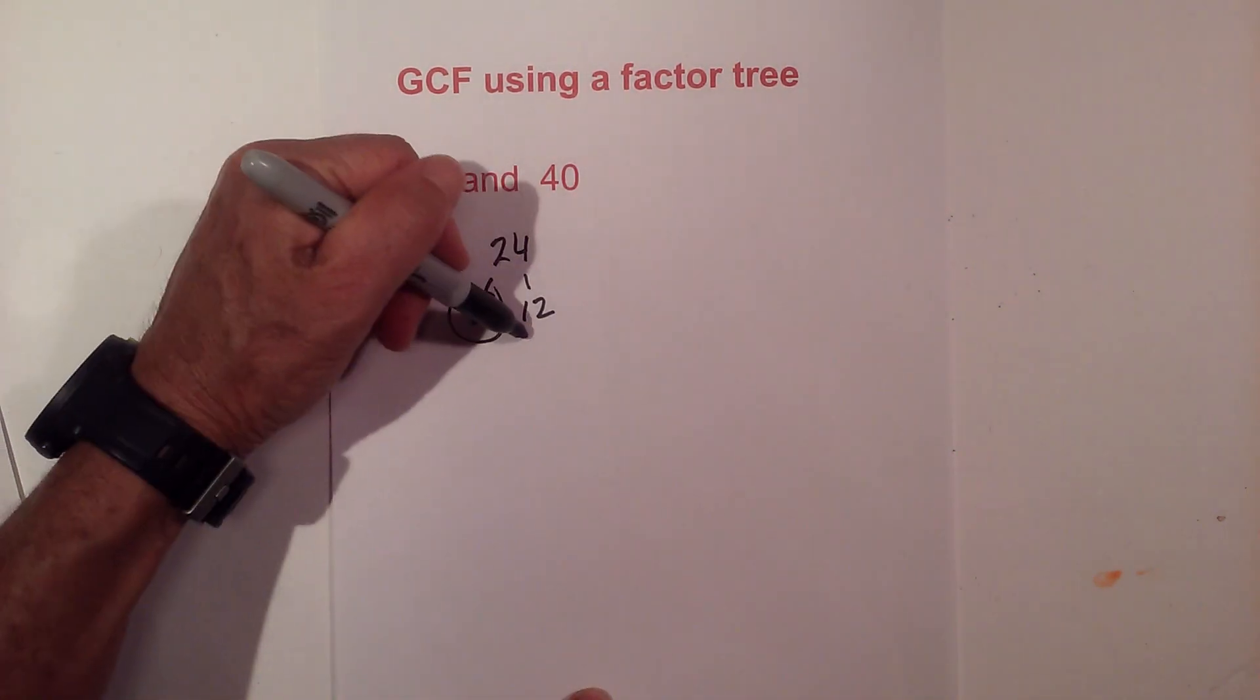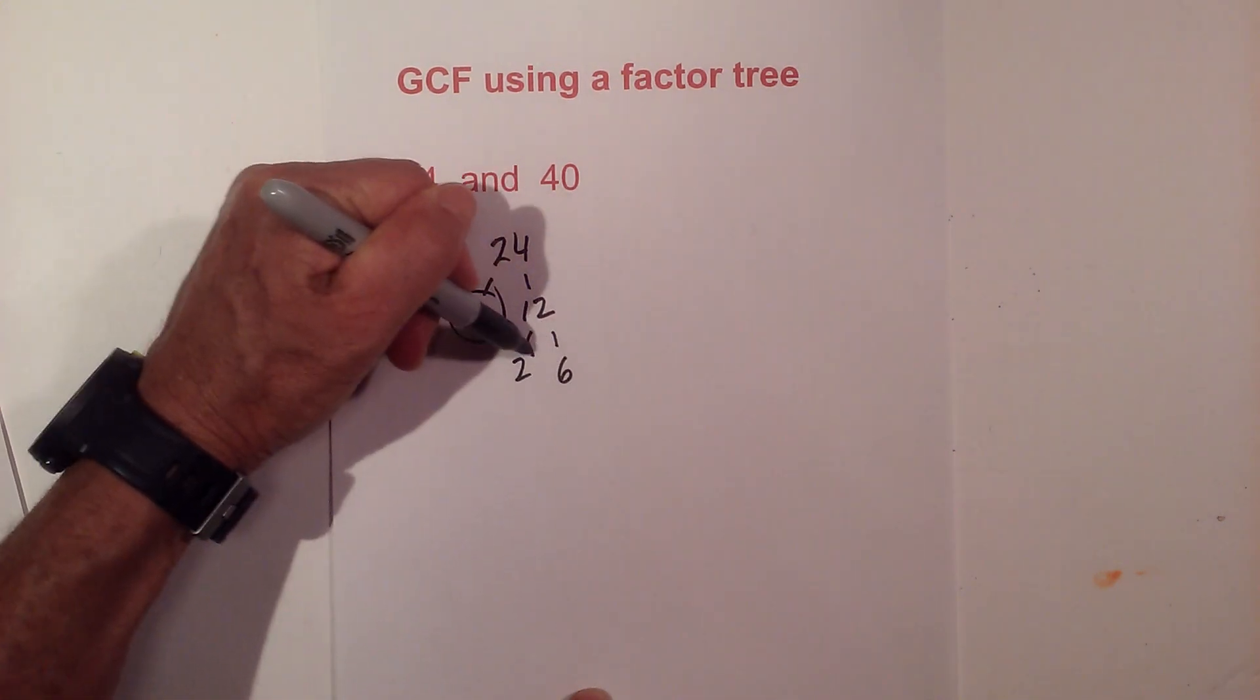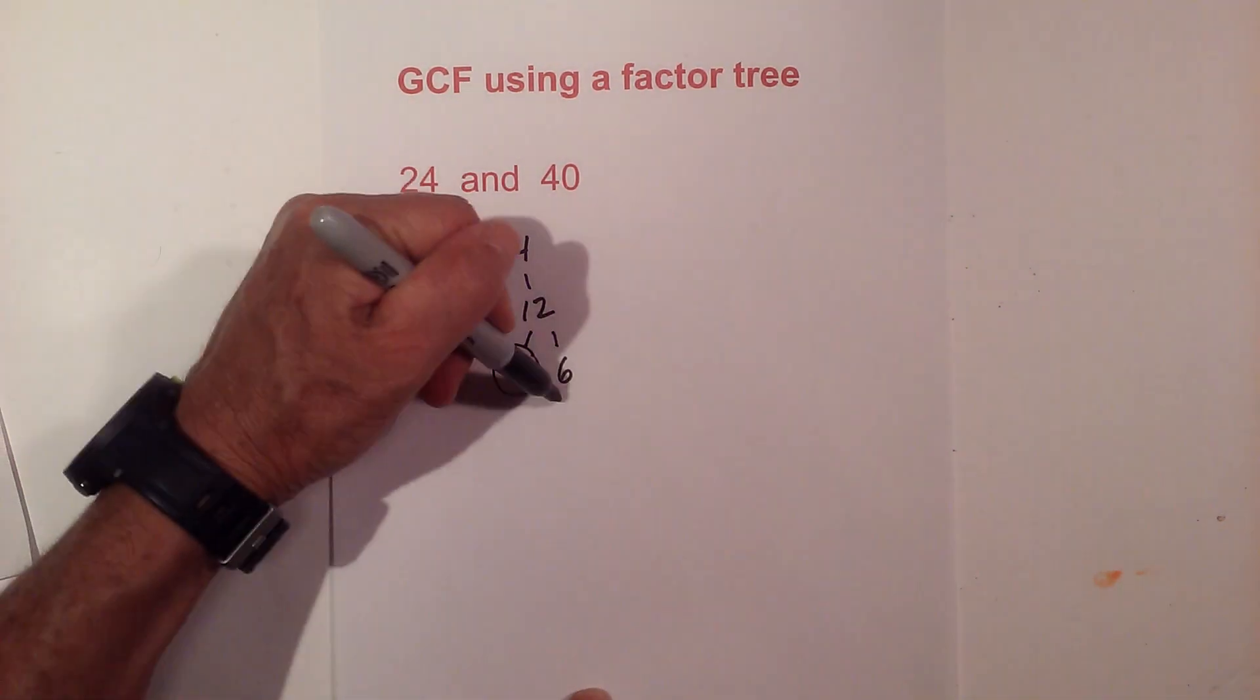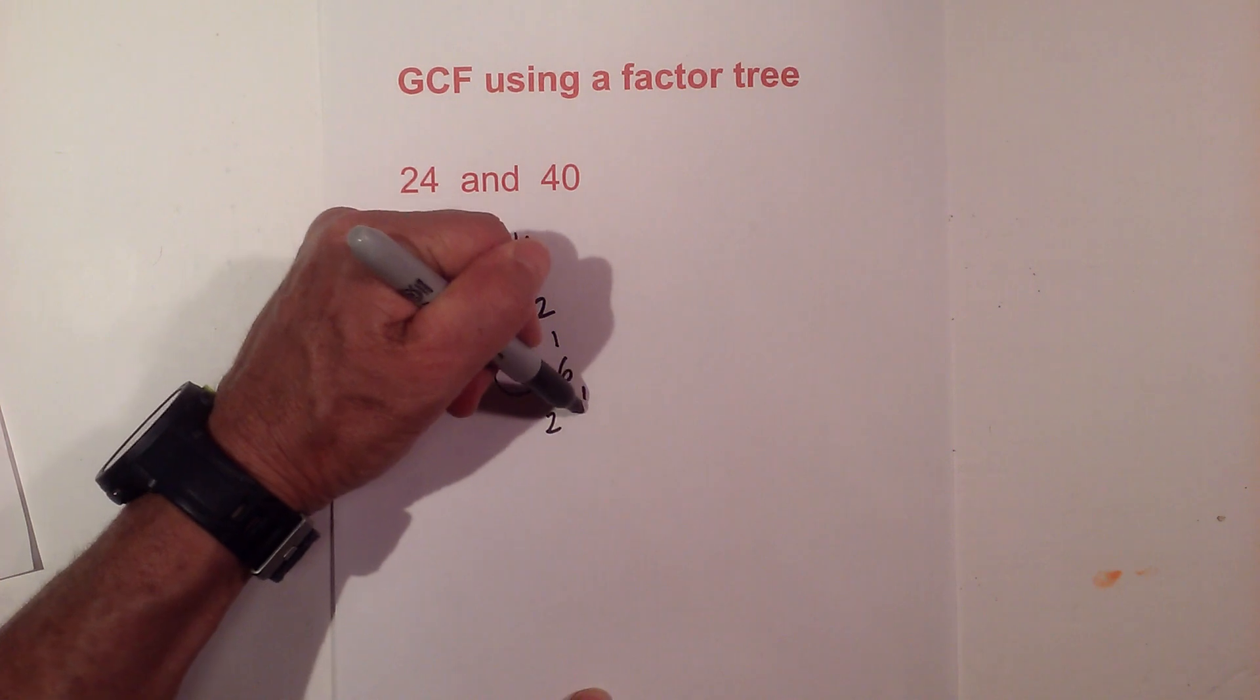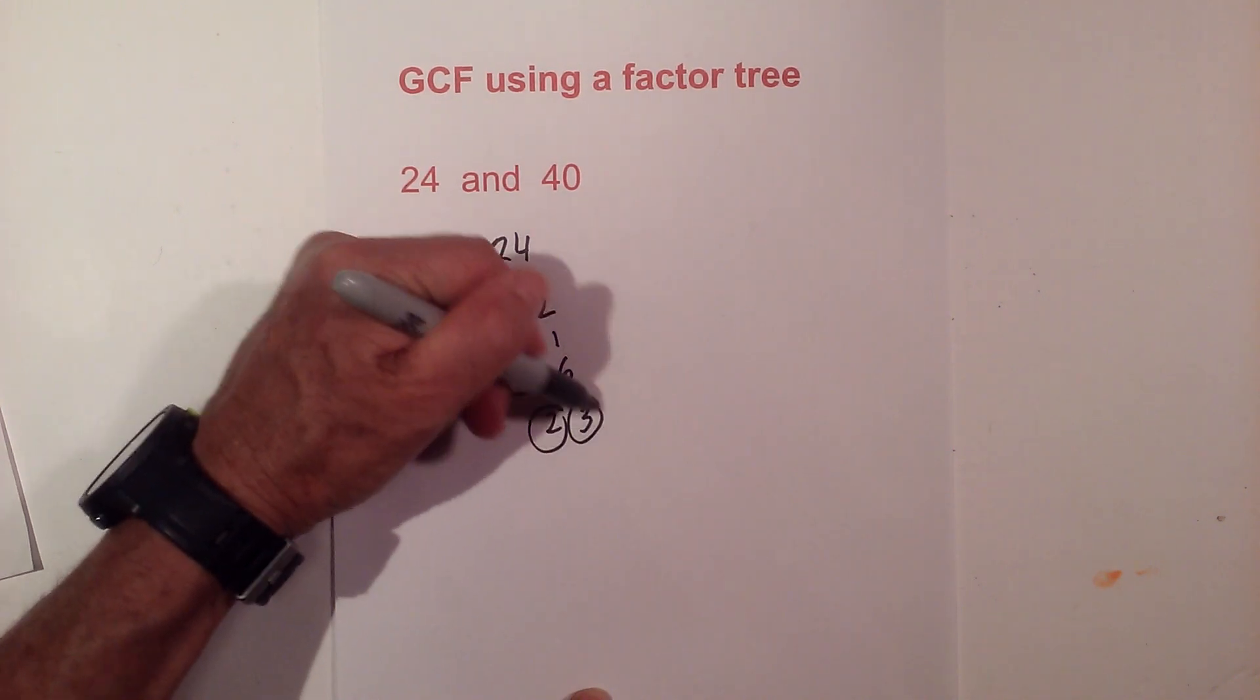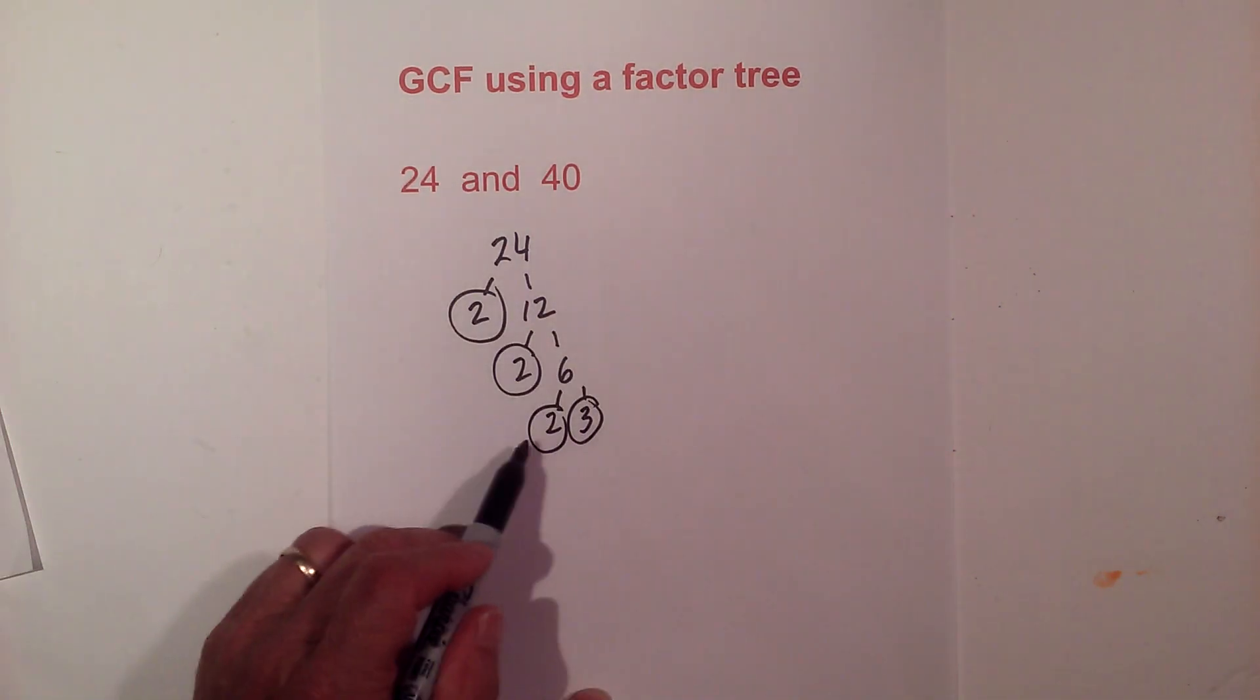Circle the 2 because it is prime. Now 2 times 6 equals 12—circle the 2 again because it is prime. And then 2 times 3—I'll circle both of these because they're prime and now we're down to prime numbers.